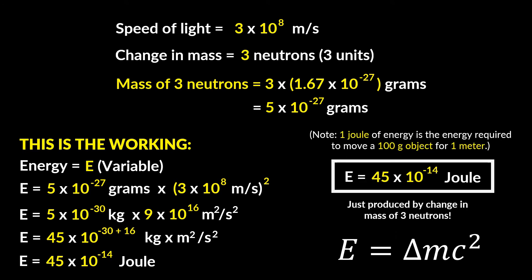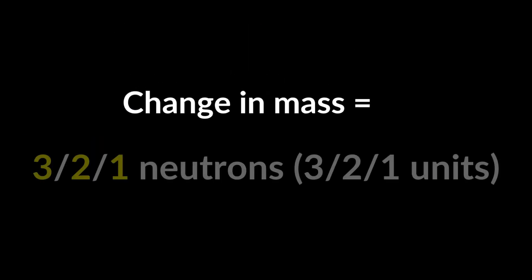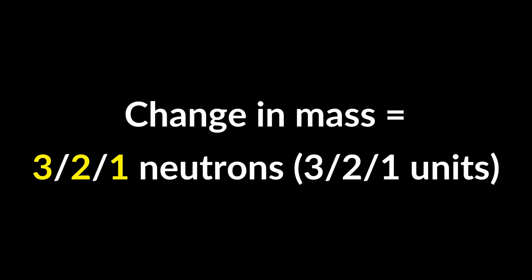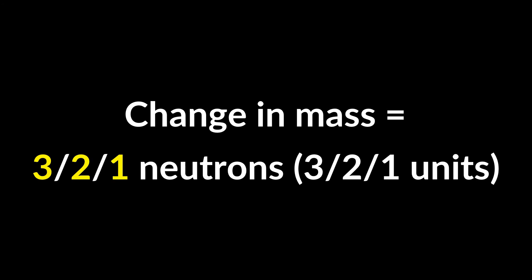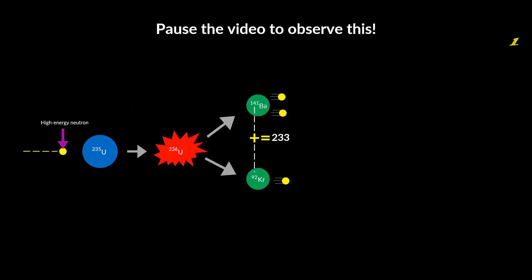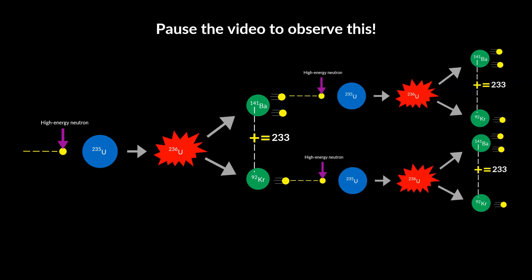It's easy to forget that as teensy an amount that may be, that is the energy produced by just the change in mass of three neutrons. I must point out here that the change in mass is not constant because some neutrons may be used to continue the chain reaction or in simple words continue to hit other Uranium-235 atoms in order to cause more nuclear fission.